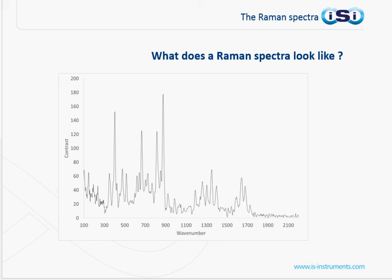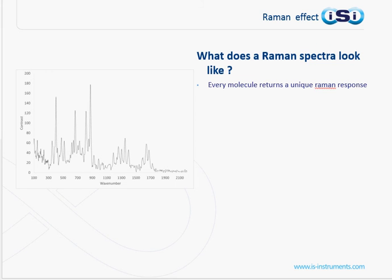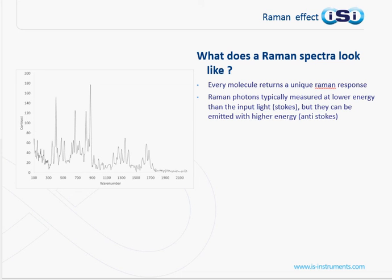So what does a Raman spectrum look like? Here we have the Raman spectra from a paracetamol tablet, and as you can see, it's very complex, corresponding to the complex nature of the molecule. As already mentioned, every molecule returns its own unique Raman response. Raman signals are typically measured at lower energy to the input light — Stokes — but they can be emitted with higher energy — anti-Stokes.